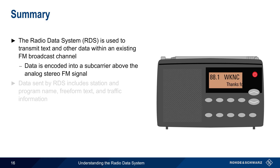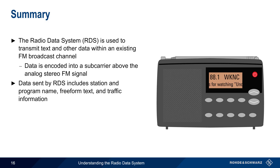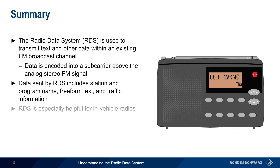The most common types of data sent via RDS are station and program name, general text information, and traffic information. RDS is supported in desktop and portable receivers, but is particularly helpful for in-vehicle or car radios.